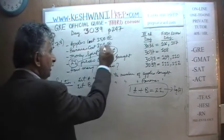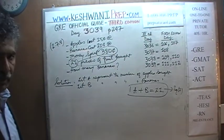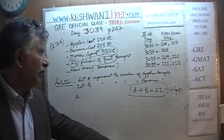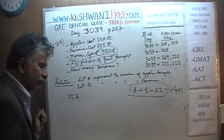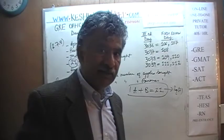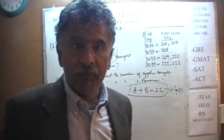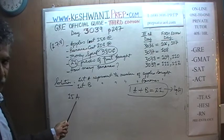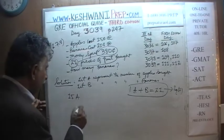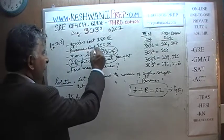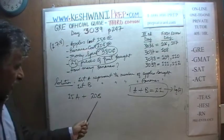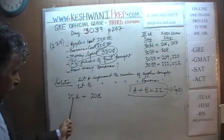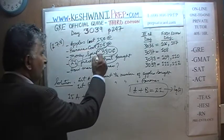Equation 1 comes from the fact that we spent $3.80, which is 380 cents. We bought A apples at 15 cents each, so the cost for apples is 15A cents. We bought B bananas at 20 cents each, so the cost for bananas is 20B cents. For example, if we bought 2 apples, that's 30 cents; if we bought 5 apples, that's 75 cents. The total spent on apples and bananas must equal 380 cents: 15A + 20B = 380.